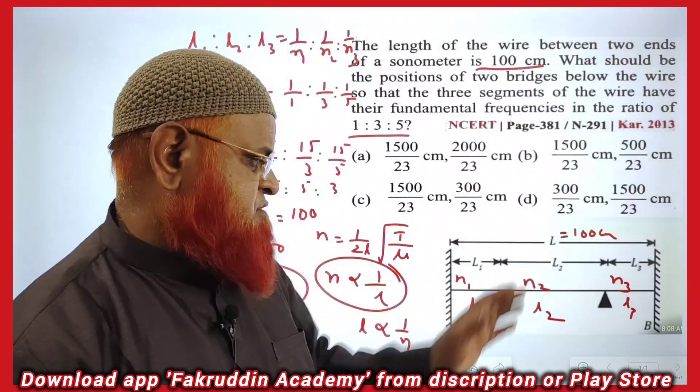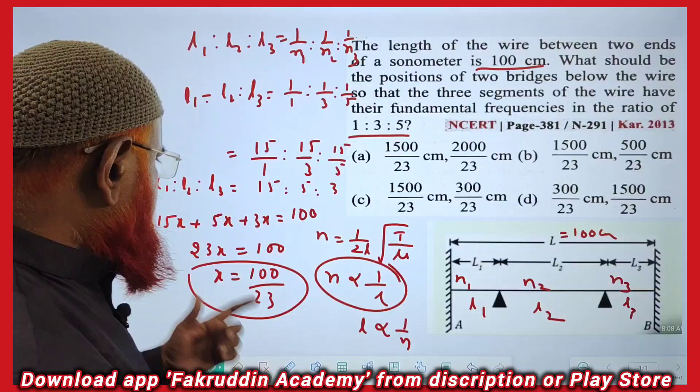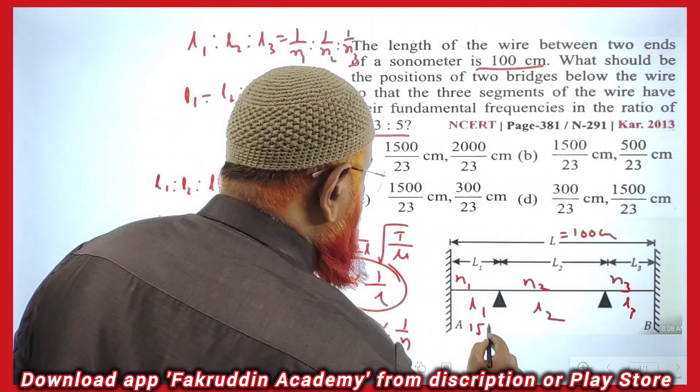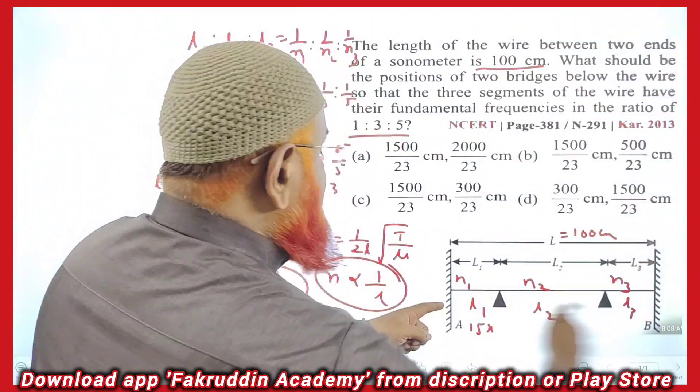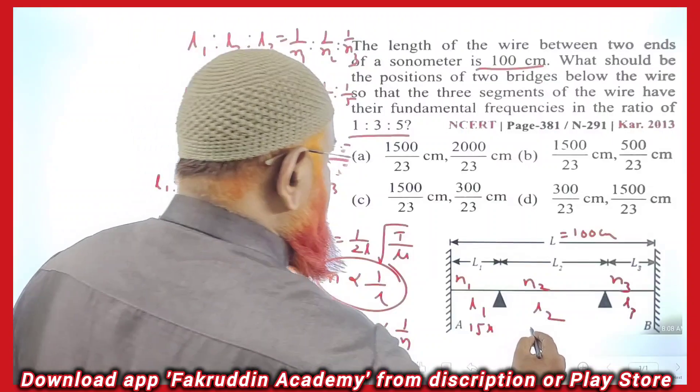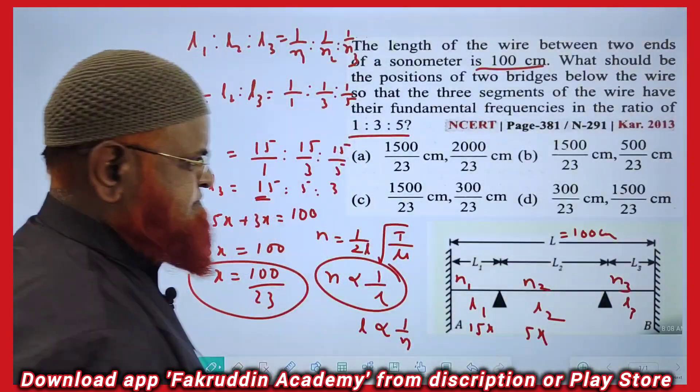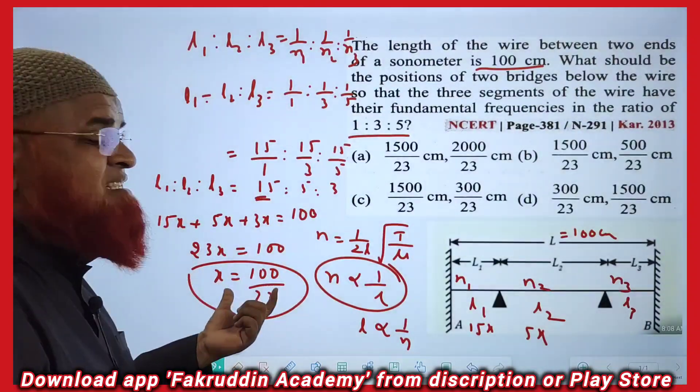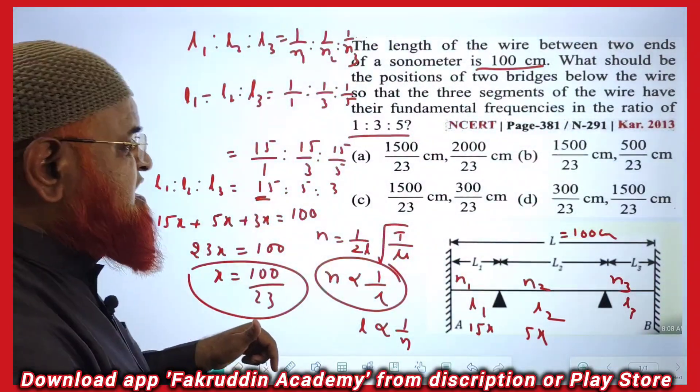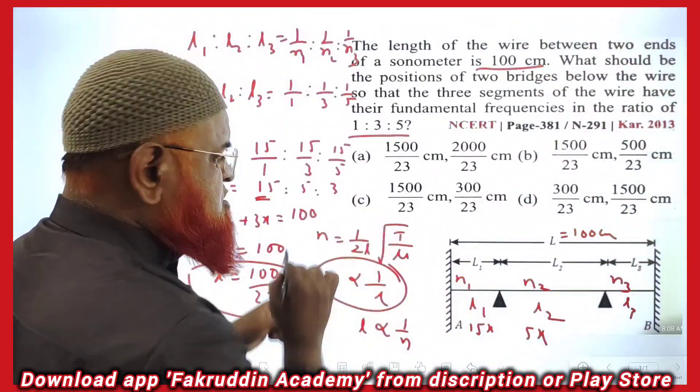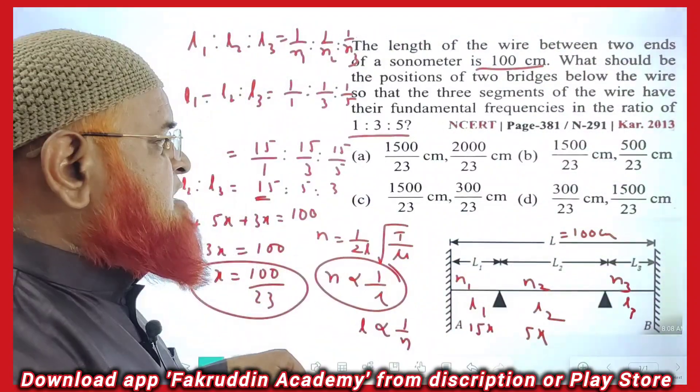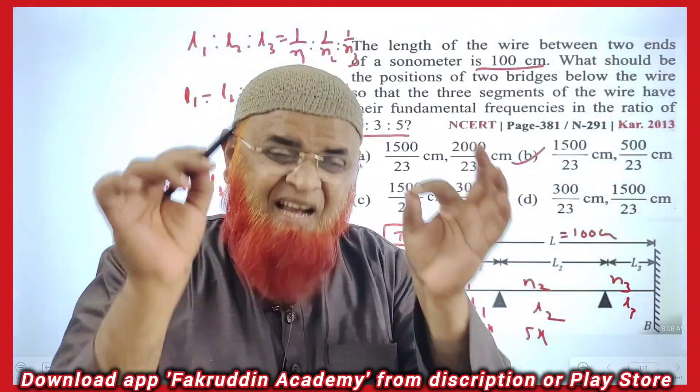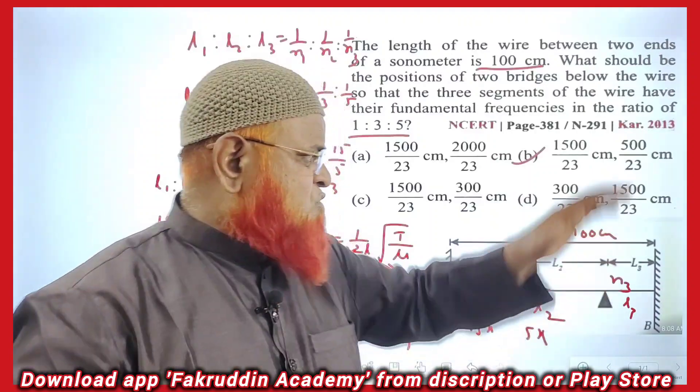Now you have to find out the ratios of the lengths. L1 is 15x, so L1 = 15 × (100/23) = 1500/23. L2 is 5x, so 5 × (100/23) = 500/23. So 1500/23 and 500/23 is going to be your correct answer.